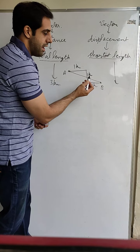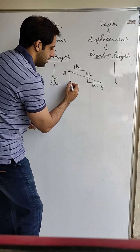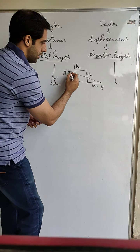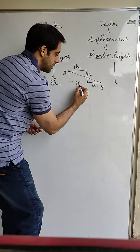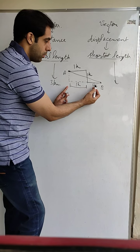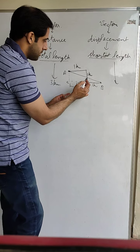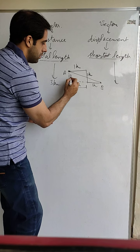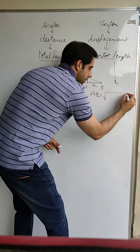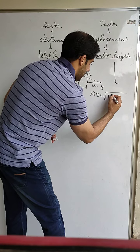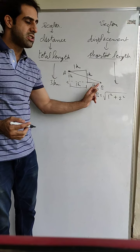Whatever is the length between A and B — that is your displacement. To find it, you draw a perpendicular and join the points, forming a right triangle. Using the properties of the parallelogram formed, if this side is 1 kilometer, the opposite side is also 1 kilometer, making the base of the right triangle 2 kilometers and the height 1 kilometer. By applying the Pythagoras theorem, you can find the value of AB, which will be the value of displacement.